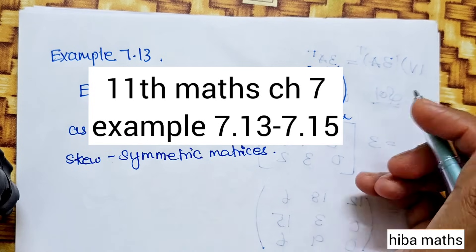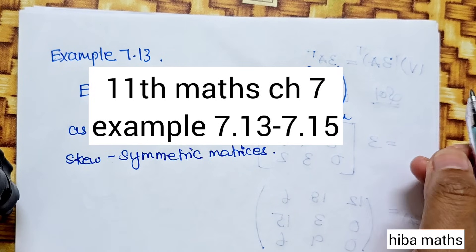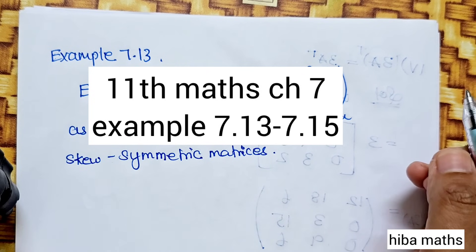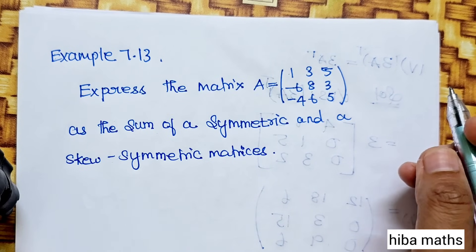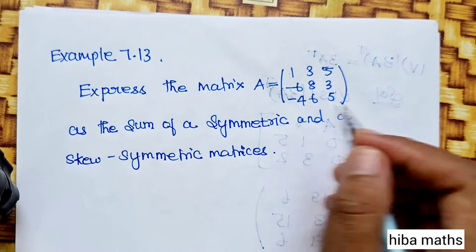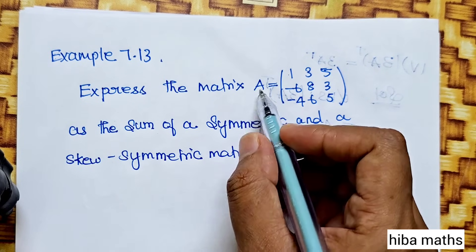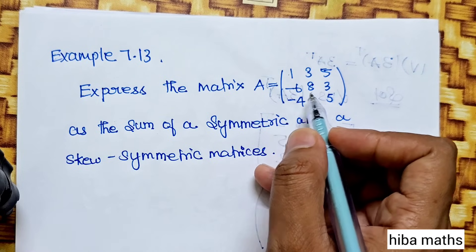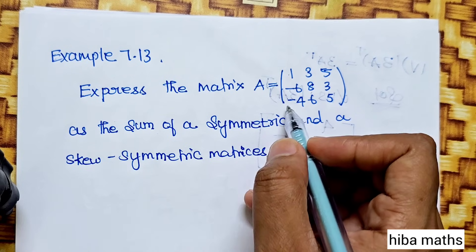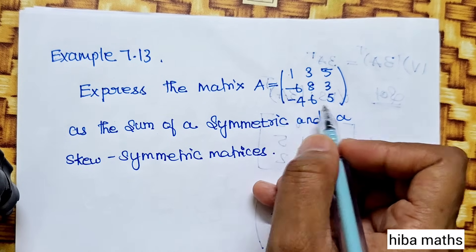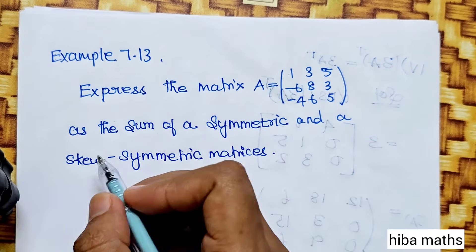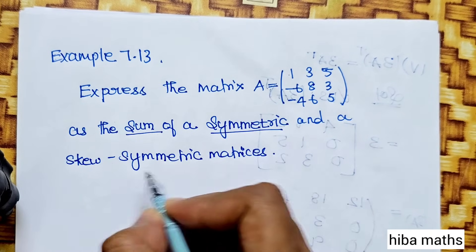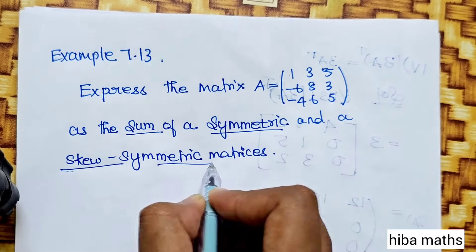Hello students, welcome to Hiva Max, 11th Standard Max, Chapter 7, Matrices and Determinants. Example 7.13 in the video: express the matrix A equal to [1, 3, 5; -6, 8, 3; -4, 6, 5] as a sum of a symmetric and skew symmetric matrix.